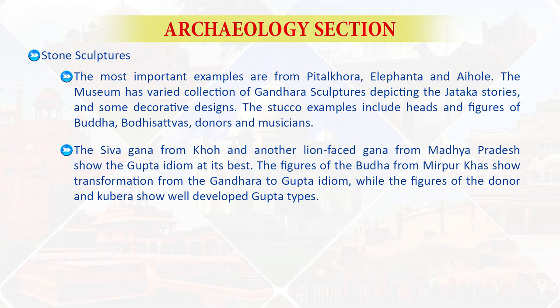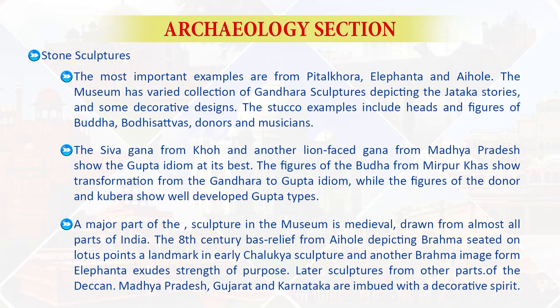The figures of the Buddha from Mirpur Khas show the transformation from the Gandhara to the Gupta idiom, while the figures of the donor and Kubera show well-developed Gupta types. A major part of the sculpture in the museum is medieval, drawn from almost all parts of India. The eighth-century bas-relief from Aihole depicting Brahma seated on a lotus is a landmark in early Chalukya sculpture, and a Brahma image from Elephanta also shows strength of purpose. Later sculptures from the Deccan, Madhya Pradesh, Gujarat, and Karnataka are imbued with a decorative spirit.